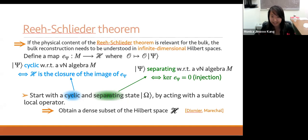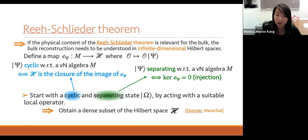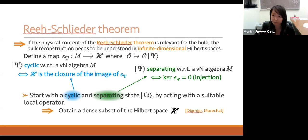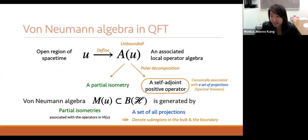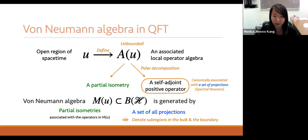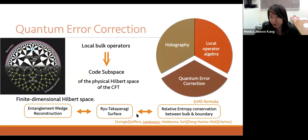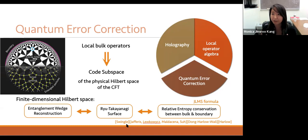If the physical content of the Reeh-Schlieder theorem is relevant for the bulk, then bulk reconstruction must be understood in explicitly infinite-dimensional Hilbert spaces without regulating. From this perspective, I want to explain how von Neumann algebra, despite being purely algebraic, still understands some geometric information of the spacetime theory.